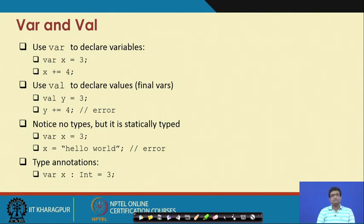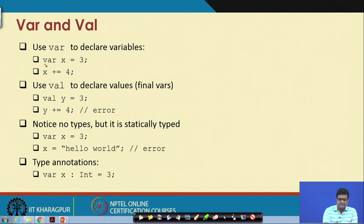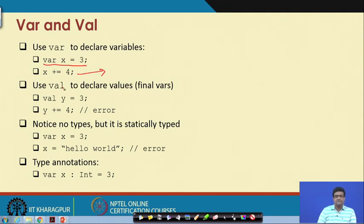First we discuss var and val. You can use the var keyword to declare variables — Scala has the concept of variables and constants. For example, var x defines a variable x. At a later point in the program you can say x += 4 or x = 5, and it will work because x is a variable.